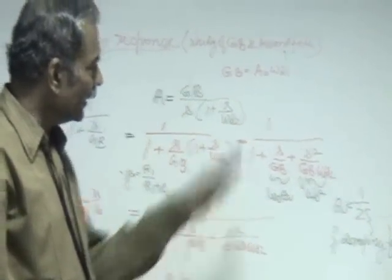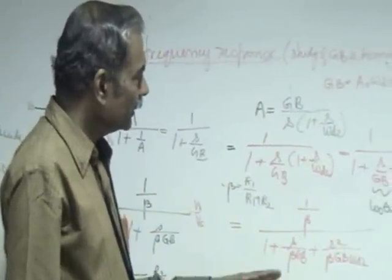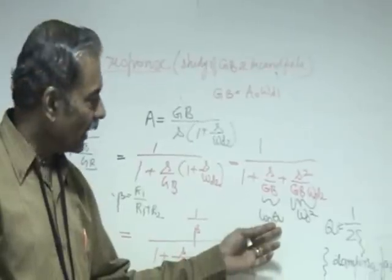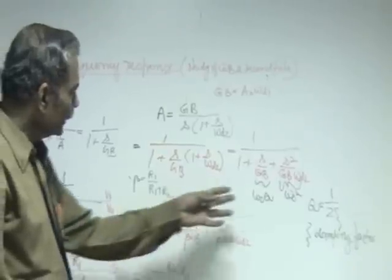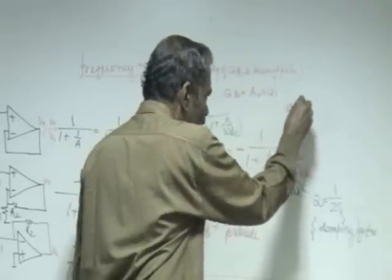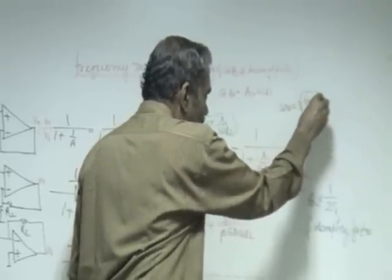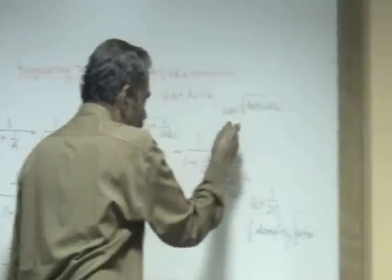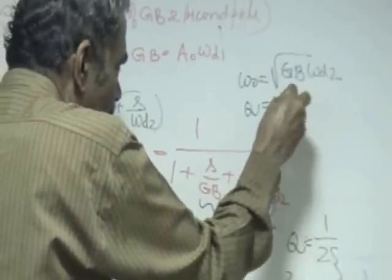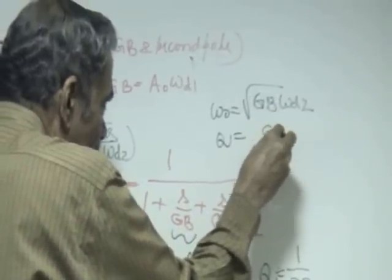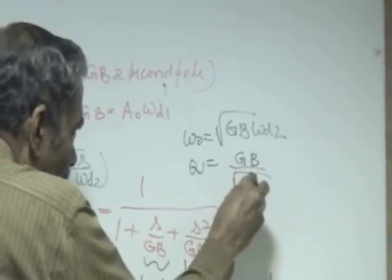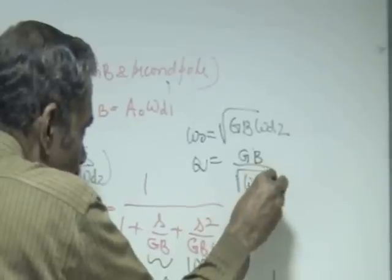This characterizes any second order system and what happens with this is that there is going to be a peaking due to the fact that q is going to be high. Q in this particular case you can evaluate by equating omega naught to square root of GB into omega d2. Q will be equal to GB divided by square root of omega d2 into GB.